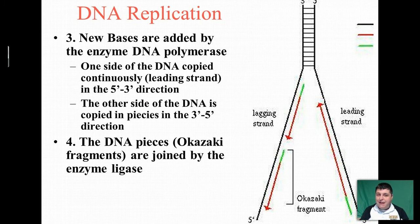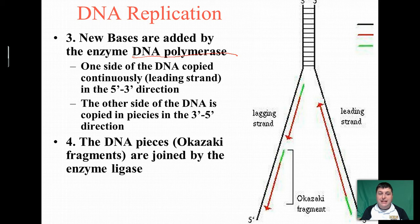Once we have unzipped our DNA, we're going to be able to add new free DNA nucleotides. This is going to be done by the enzyme DNA polymerase. We know it's an enzyme because it ends in -ase. It's named for what it does — it adds new DNA monomers to create a DNA polymer, new strands of DNA.